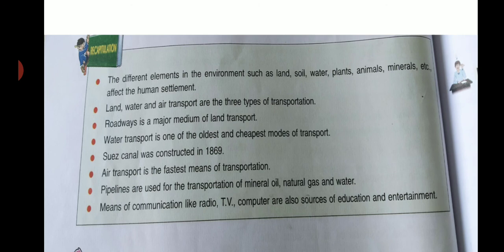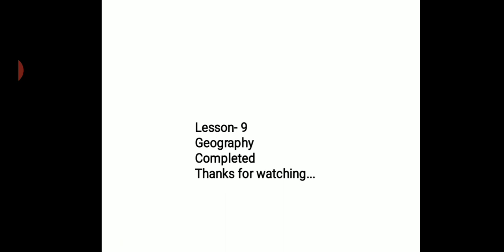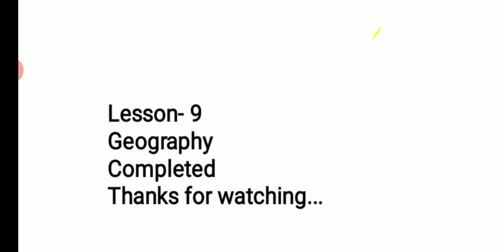Roadways is the main medium of transport. Water transport is the oldest and cheapest - the Suez Canal was constructed in 1869 connecting the Mediterranean Sea to the Red Sea. Air transport is the fastest. Pipeline system transports mineral oil, natural gases, and water. Means of communication include radio, TV, and many other modes which help educate and entertain people. Students, our chapter - Lesson 6 - is completed. God bless you all. Please complete your copy work. Thank you.